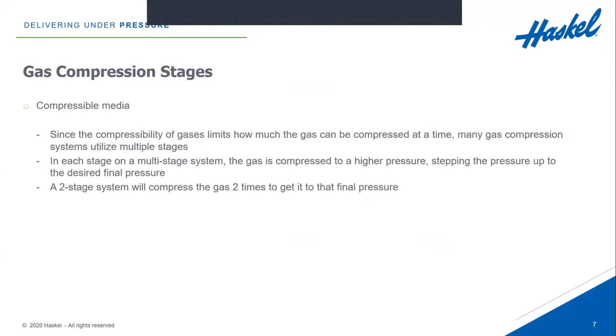So when we want to go from a low pressure to a very high pressure, we have to use stages and bring the gas up in multiple stages. A stage would be where we just increase the gas to an intermediate pressure, and then the next stage would take it to a higher pressure. So a two-stage system will compress the gas two times to get to that final pressure.